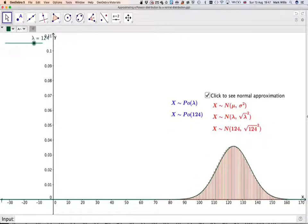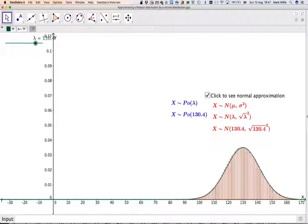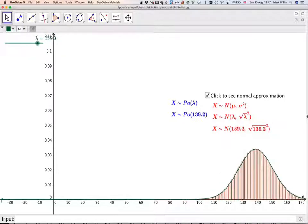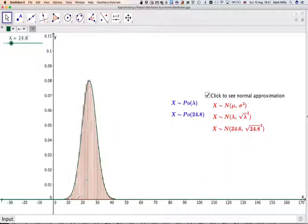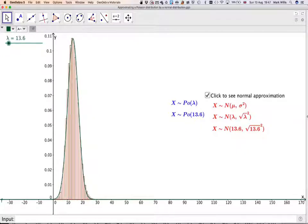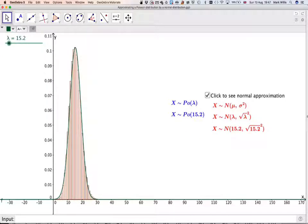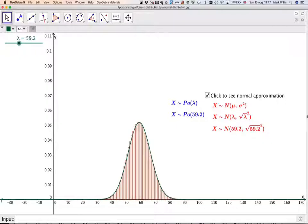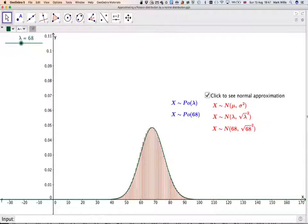Now this works if lambda is very large. Look, it looks more and more normal as we go further up here, and perhaps not quite so normal as we go down this end. So what we need is to have lambda very large to be able to use a normal distribution.